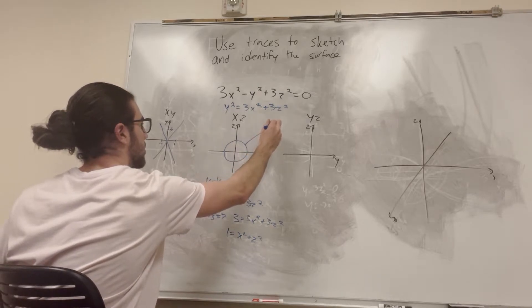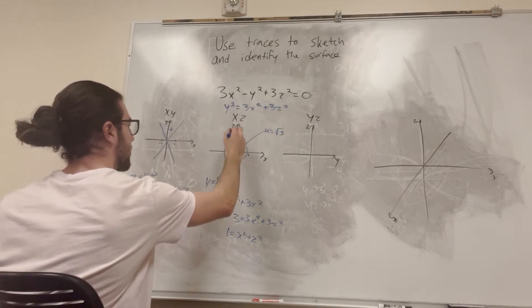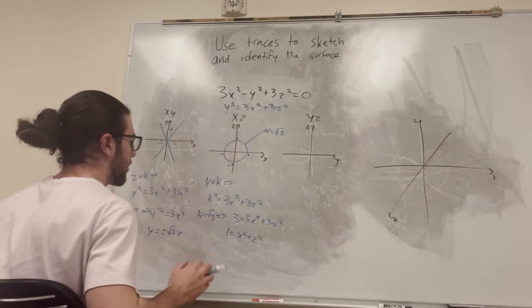So we can just say that here. That is k is equal to a square root of 3. And this is 1, 1, negative 1, negative 1. Make sure you label your stuff.